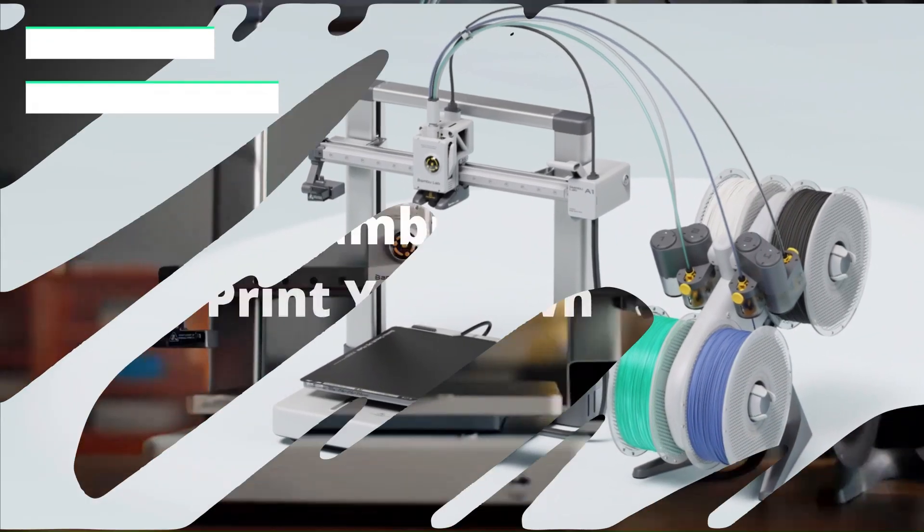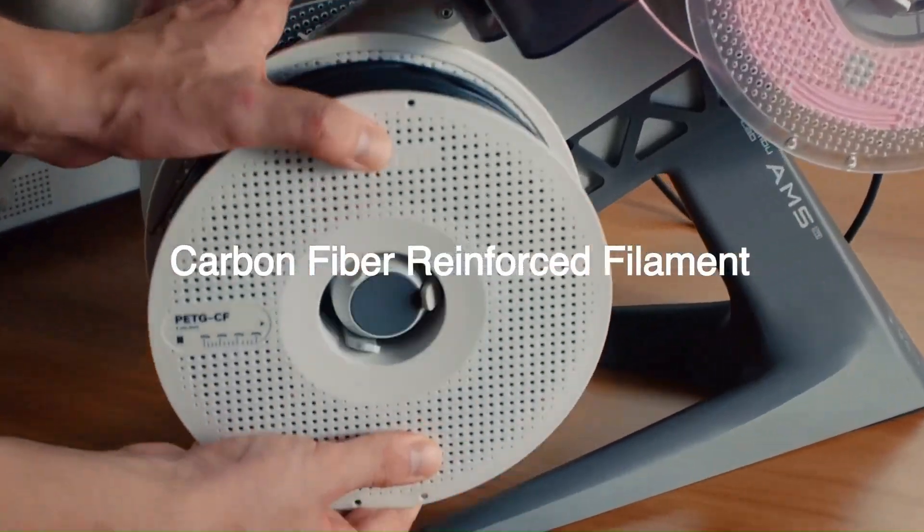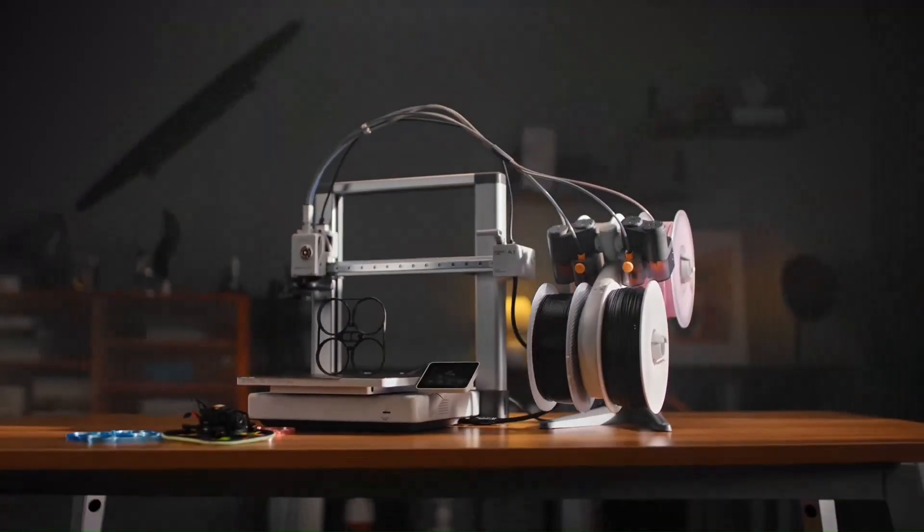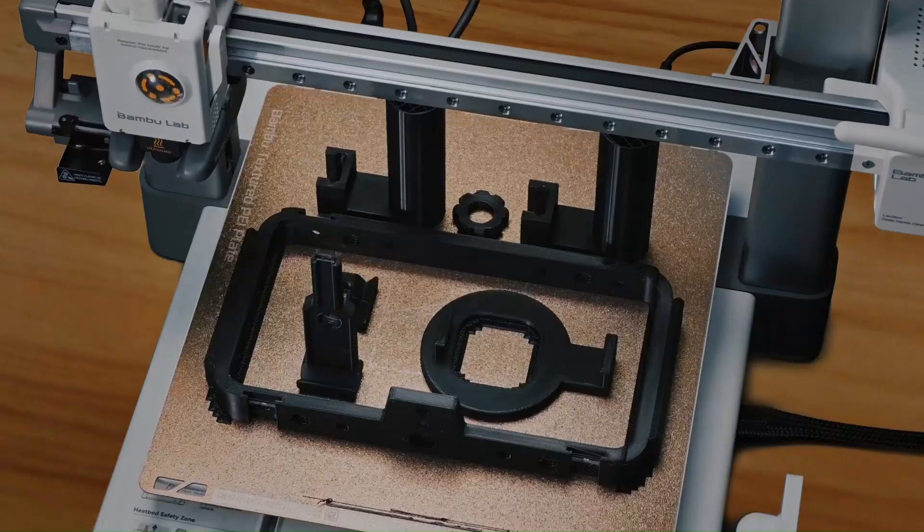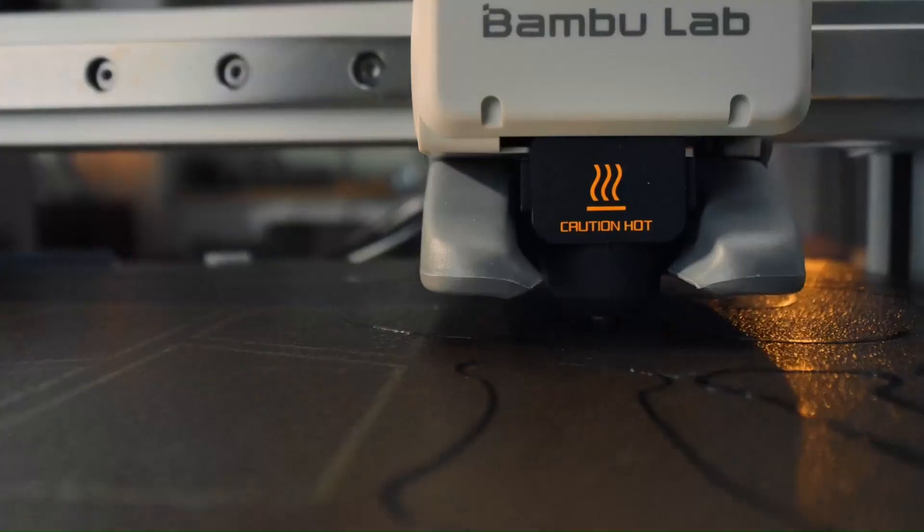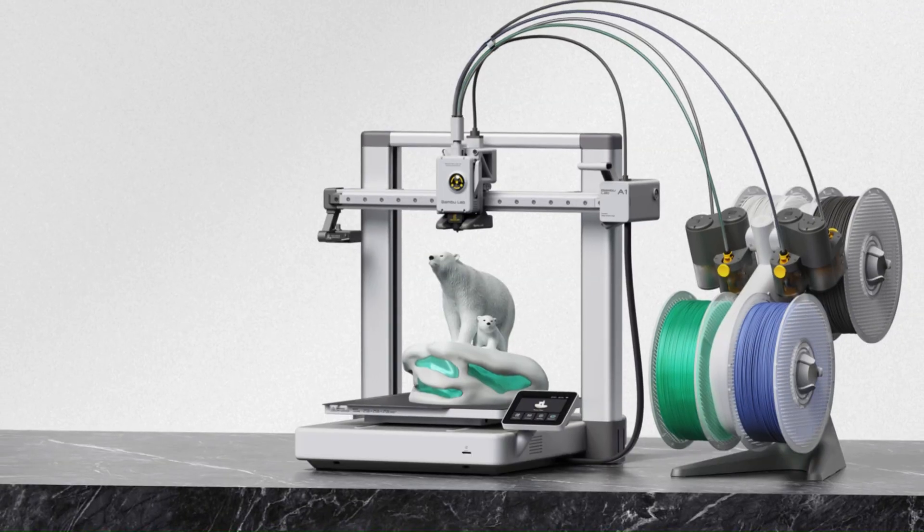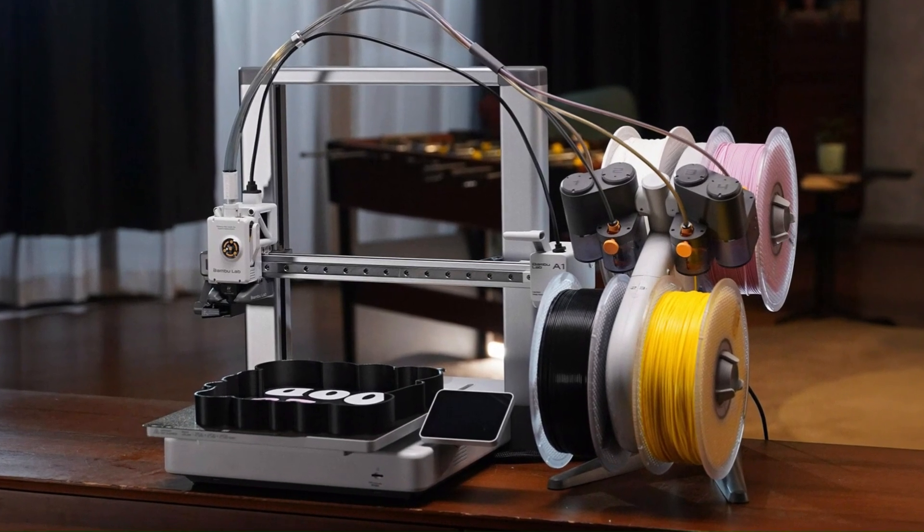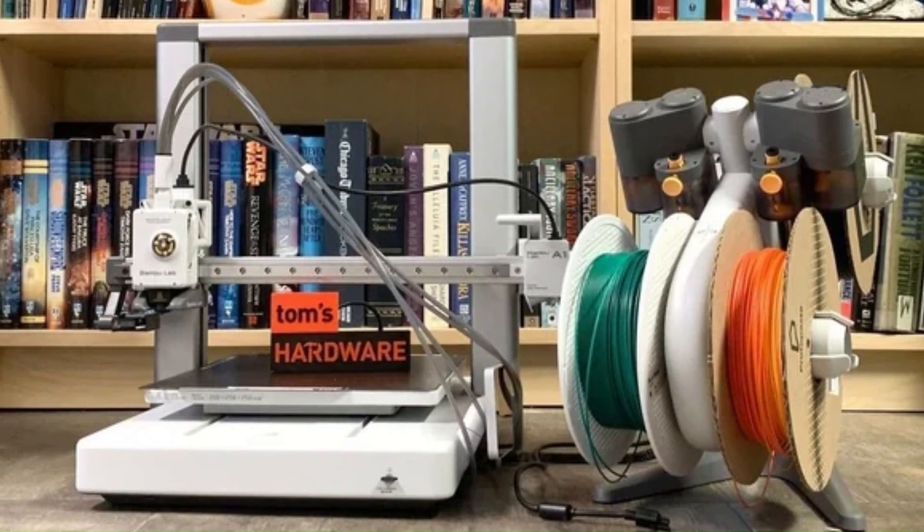Number 1: Bamboo Lab A1. The Bamboo Lab A1 is a compact, high-speed CoreXY 3D printer designed for ease of use and reliability. With automatic bed leveling, active vibration compensation, and a direct-drive extruder, it delivers consistent, high-quality prints with minimal setup. One of its key features is Klipper firmware, enabling fast and precise movements at speeds up to 500mm per second. This makes the A1 one of the fastest budget-friendly 3D printers in its class. Users can also upgrade with the AMS Lite system, allowing for multicolor and multi-material printing.